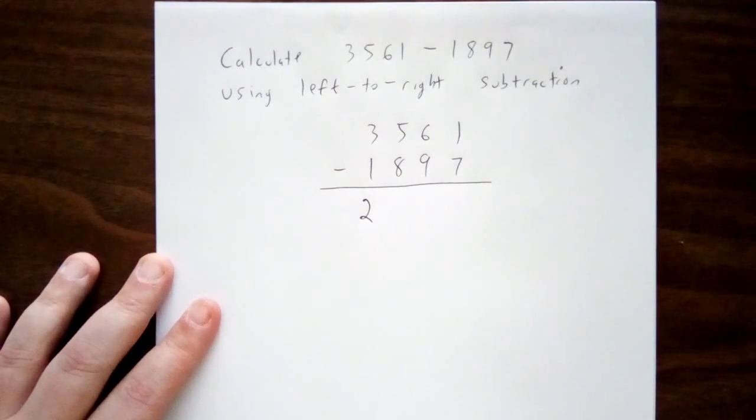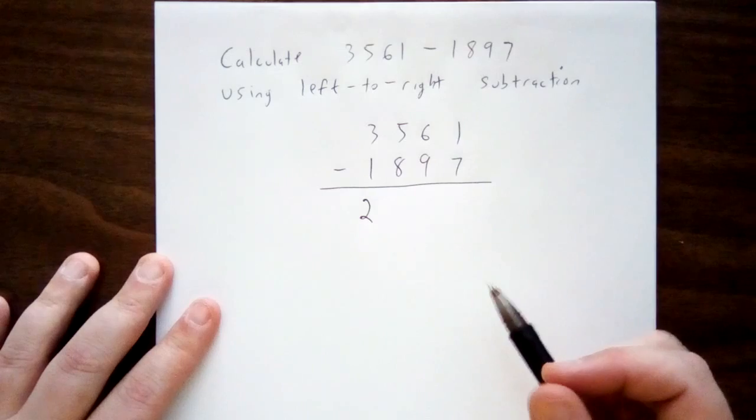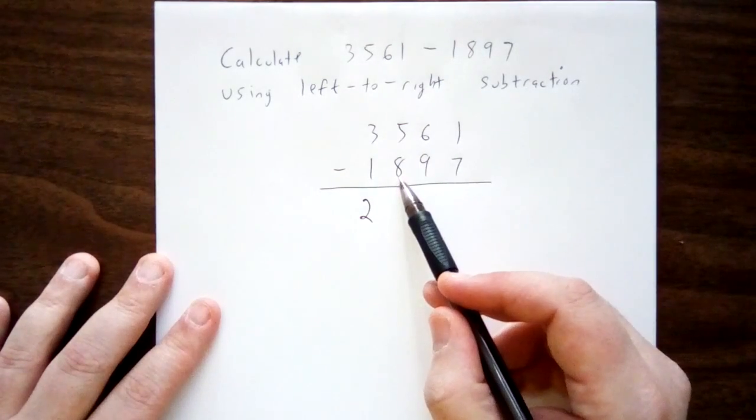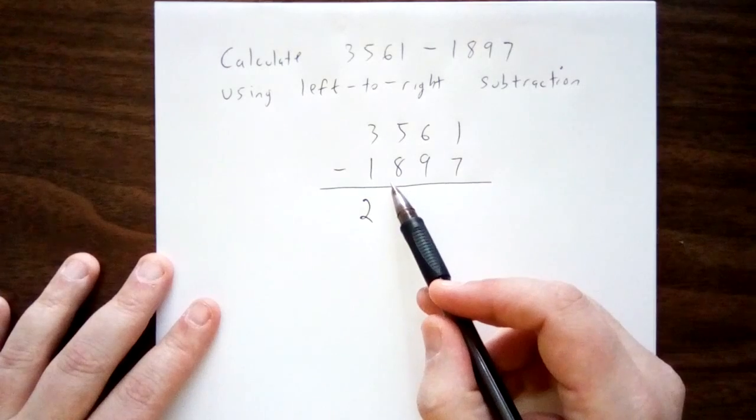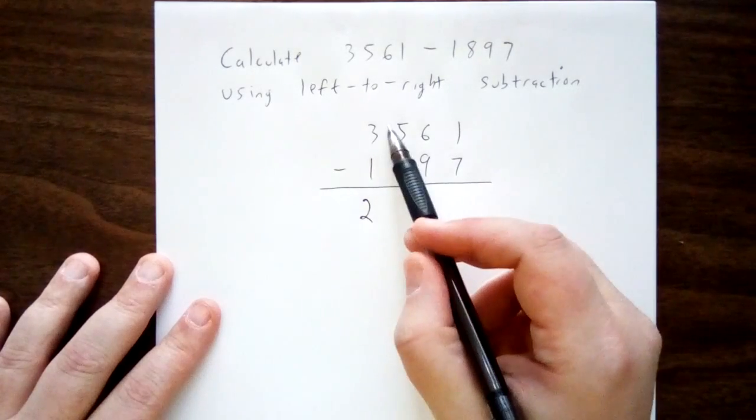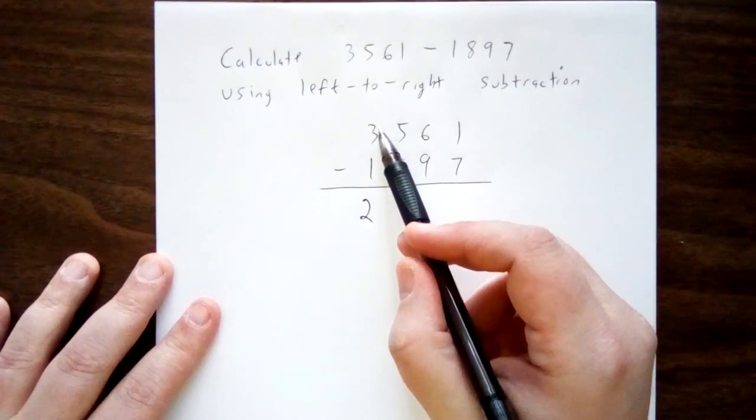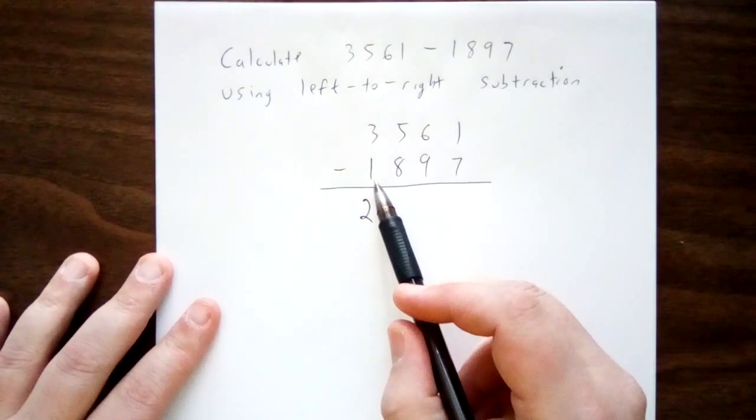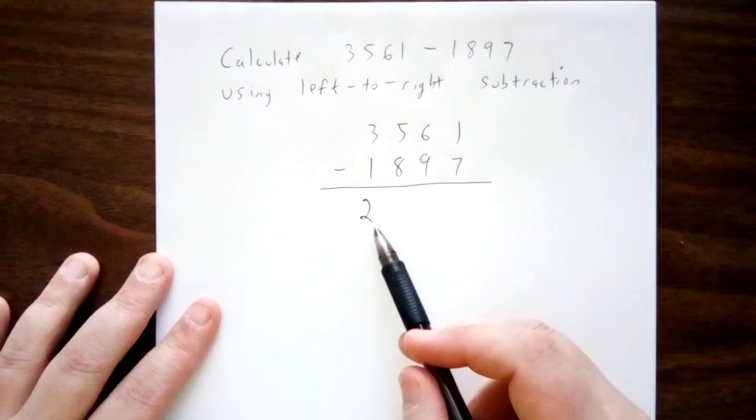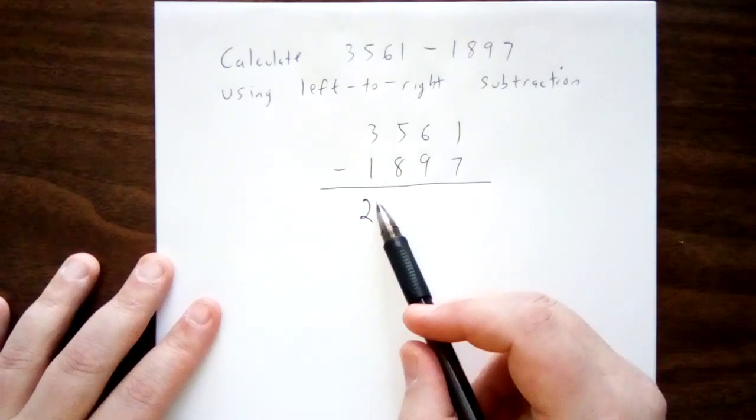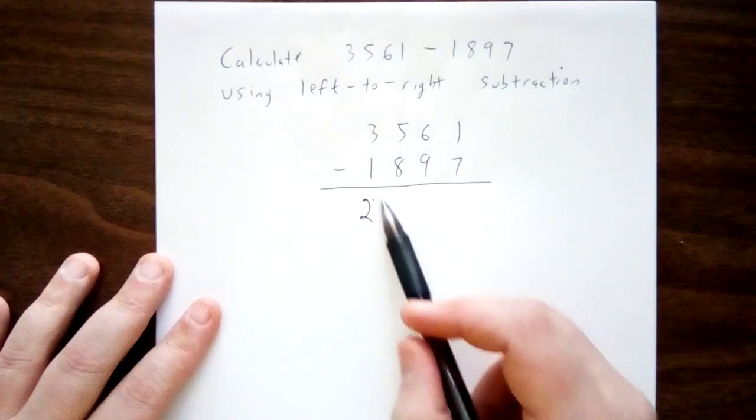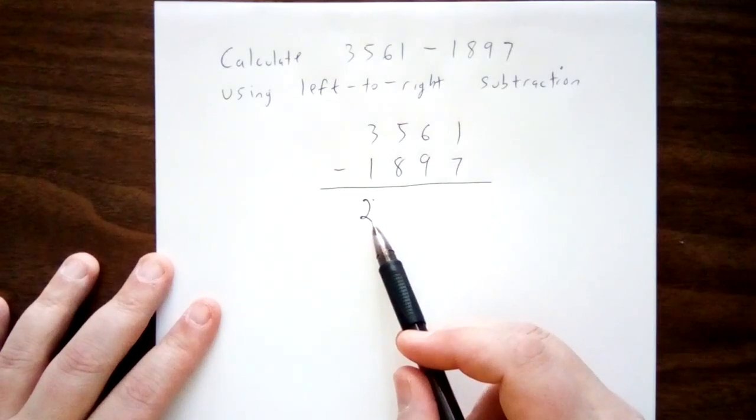The difference between left-to-right subtraction and the standard algorithm is how we deal with something like the next place, 500 minus 800. For the standard algorithm, you would be borrowing from the minuend, the first number. But we've already calculated 3,000 minus 1,000. There's 2,000 that are left over. So the borrowing that we'll be doing here won't be coming from the minuend. It'll be coming from the difference that we've already calculated.